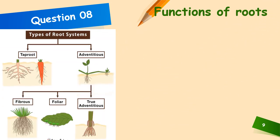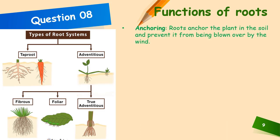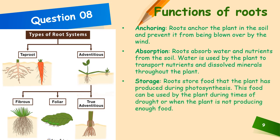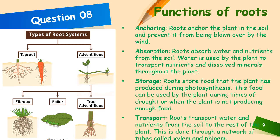Roots — types of root systems include tap roots, adventitious roots, and fibrous roots. Anchoring: roots anchor the plant in the soil and prevent it from being blown over by the wind. Roots absorb water and nutrients from the soil; water is used by the plant to transport nutrients and dissolve minerals throughout the plant. Storage: roots store food that the plant has produced during photosynthesis; this food can be used during times of drought or when the plant is not producing enough food. Transport: roots transport water and nutrients from the soil to the rest of the plant through a network of tubes called xylem and phloem.